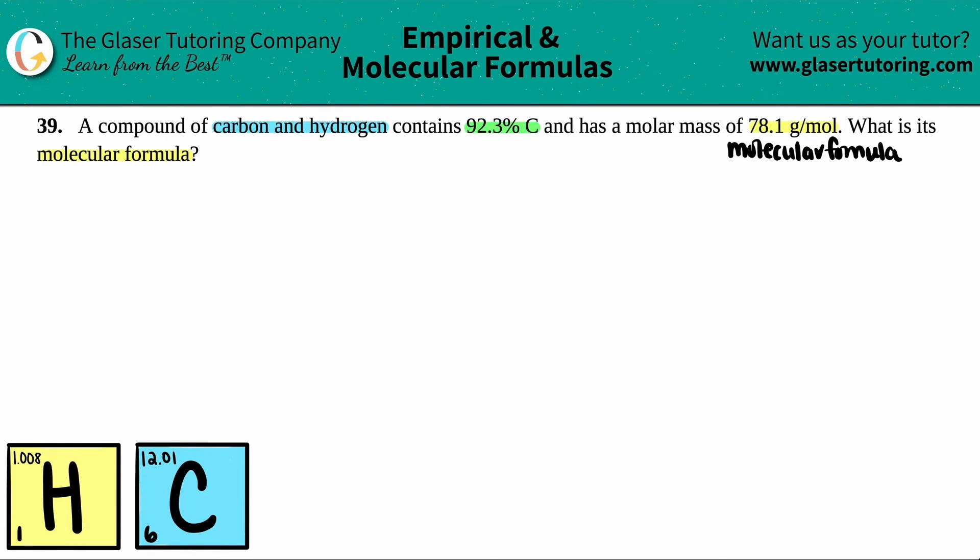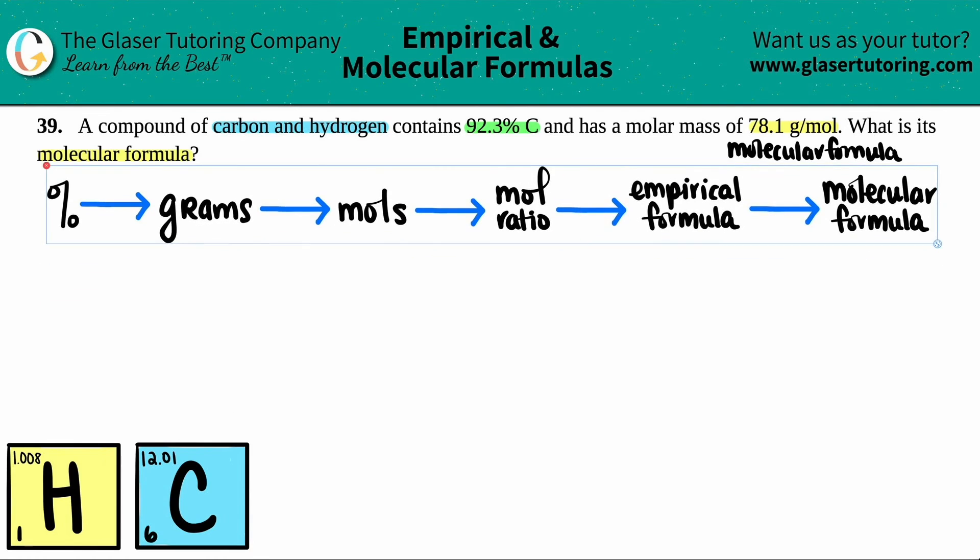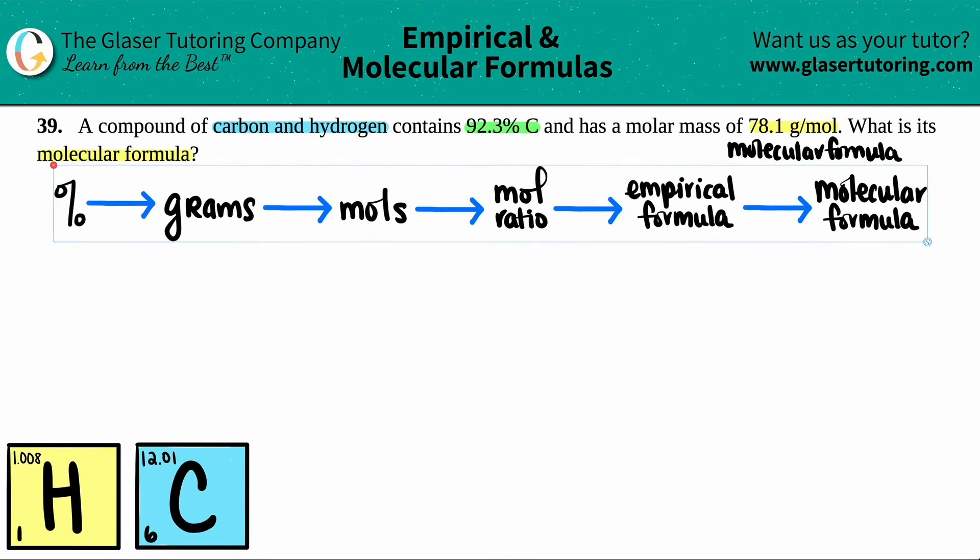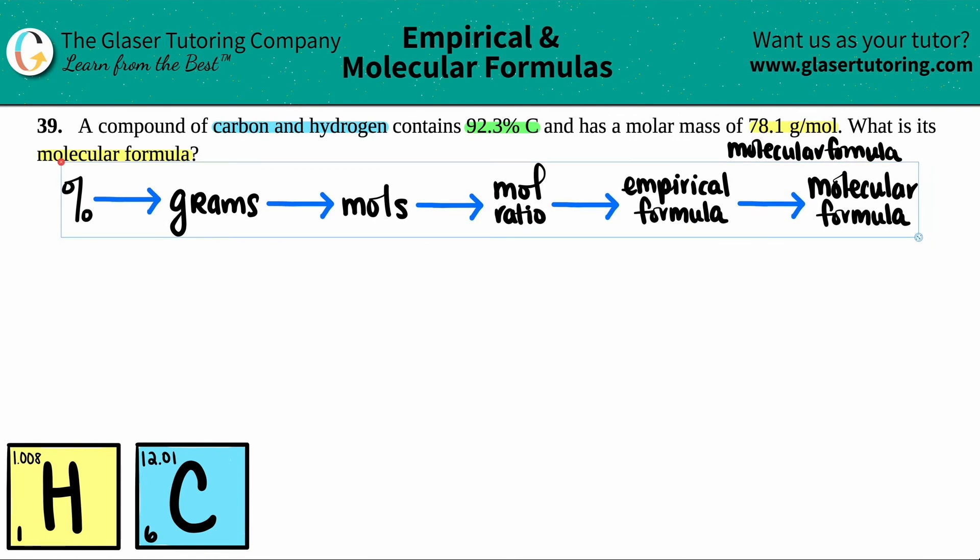We know that we can do that from a percent. We've done a couple of questions already. So if you're on the playlist and you want more practice, you can just go back a couple of questions. But there's a four-step process, and now I'm going to add one step on because we want to find the molecular formula. So this is the whole big scheme of things from a percent to get to a molecular formula. We've got to go through all of these steps.